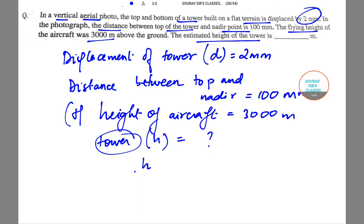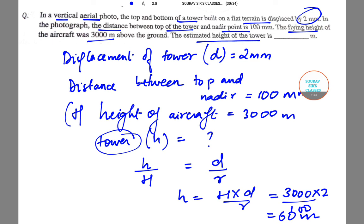For vertical aerial photographs, we have the equation h/H equals displacement divided by distance. So h equals H times d divided by r. This equals 3000 times 2 divided by 100, so h equals 60 meters. The estimated height of the tower should be 60 meters.